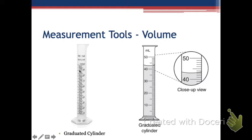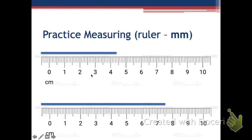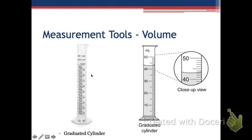Graduated cylinders are tall, skinny, and they're marked with lots of different things. Sometimes they're marked by the whole number, sometimes by the tenths place — it depends on what size of graduated cylinder you're using. If we look at the one on the left, you can see it is measured to the whole number, going from 90 with 10 tick marks up to 100.